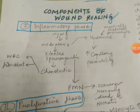Let's see what happens in the inflammatory phase. First of all, there is an injury. What happens after that? Mediators are released. Which mediators? Histamines, kinins, and prostaglandins.